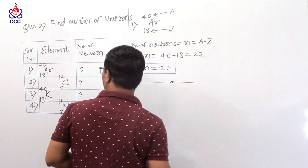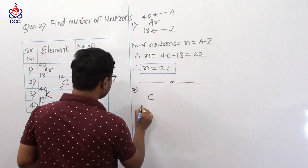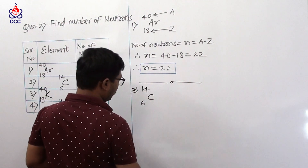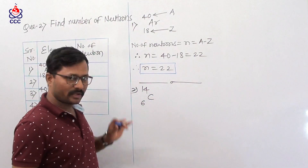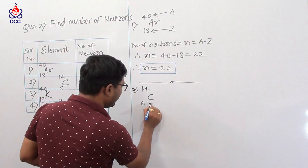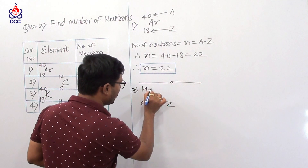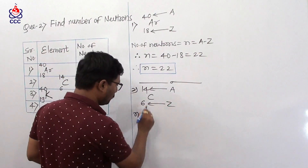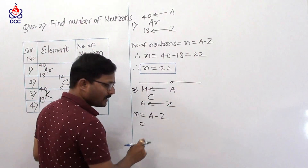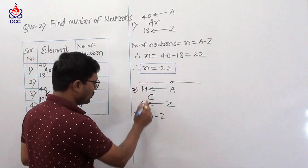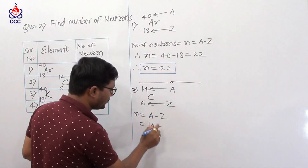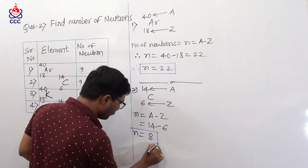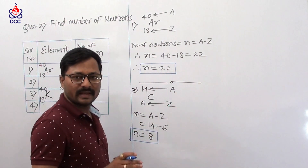Second example: carbon C, atomic number 6, atomic mass number 14. We directly solve it. Here 6 is the atomic number and 14 is the atomic mass number. Number of neutrons N equals A minus Z. A equals 14, Z equals 6. Therefore 14 minus 6 equals 8. So number of neutrons is equal to 8.